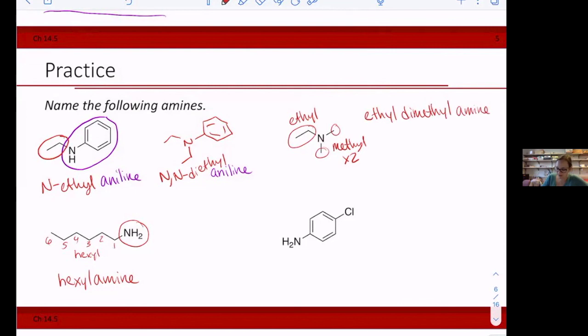Okay, and this last one is another aniline. So at the 1, 2, 3, 4 position, I have a chloro group. So now I'm going to say 4-chloroaniline is the name.